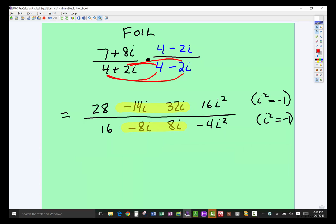So this is what we did. Let's start with the numerator. 7 times 4 is 28. 7 times negative 2i is negative 14i. 8i times 4 is 32i, and then 8i times negative 2i is negative 16i squared. I left off that negative, so I'm glad I caught that. Negative 16i squared.